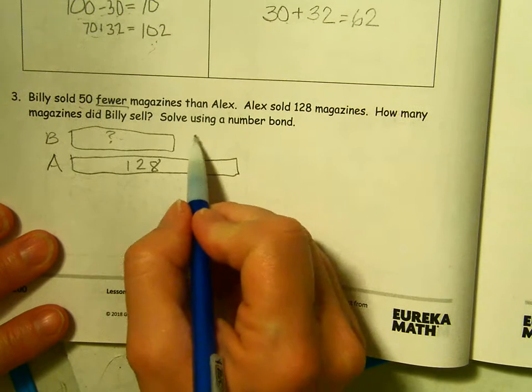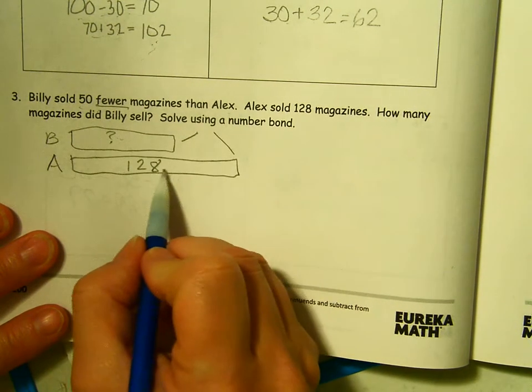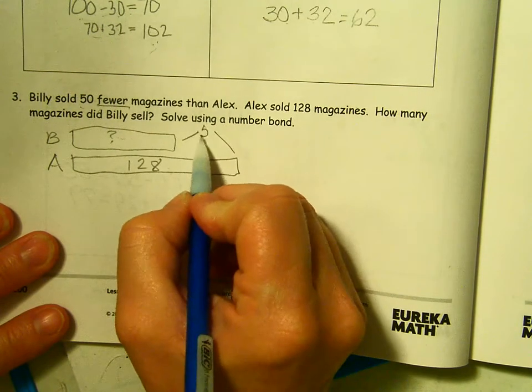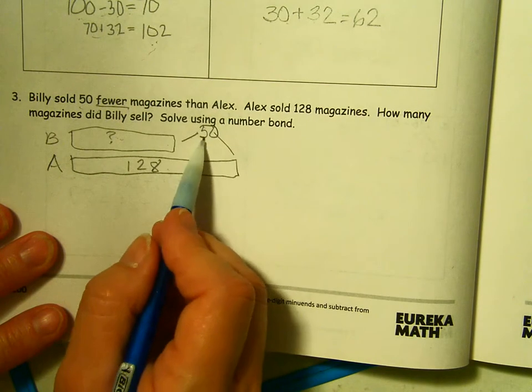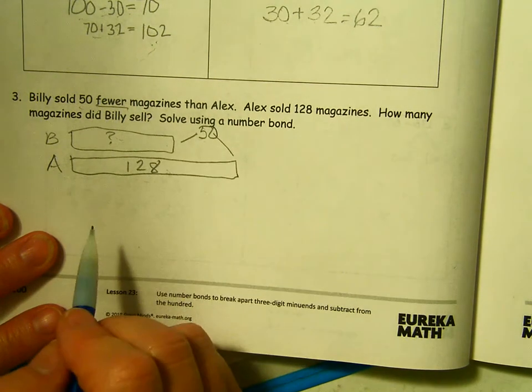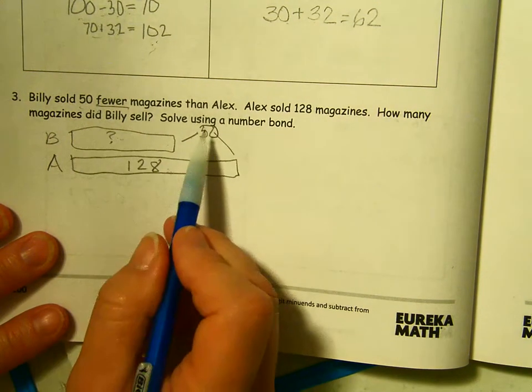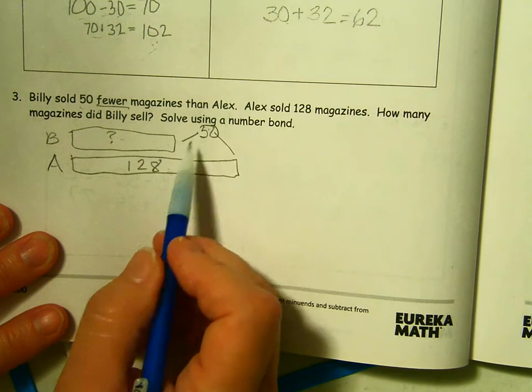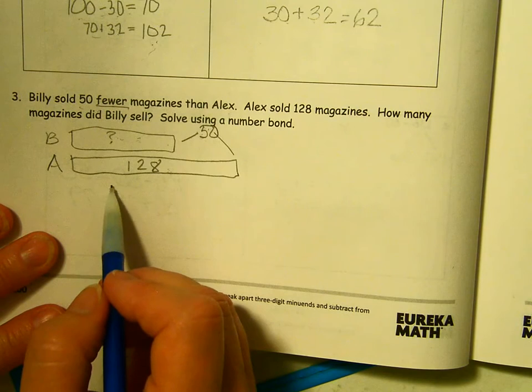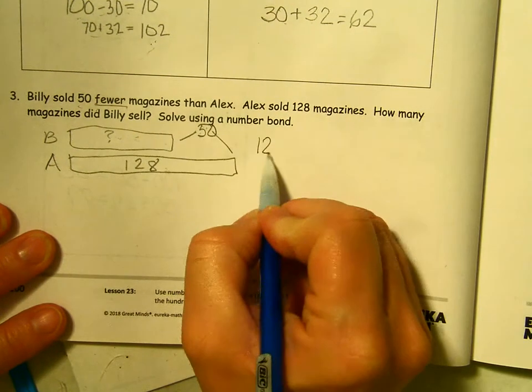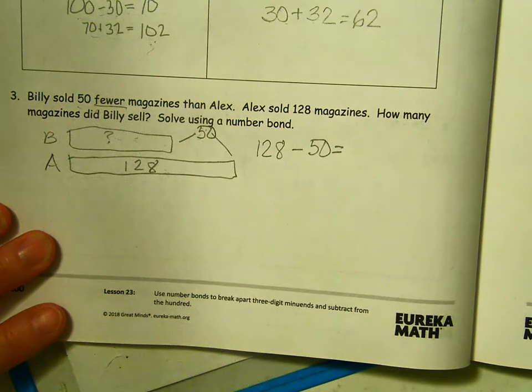We don't know what this is. We know what this is. Because they said that 128 is 50 more than what Billy sold. Or Billy sold 50 less than what Alex sold. So we have the whole and one part. If you have one part, you need to subtract to get the other part. So 128 minus 50, that's going to tell us how much Billy had.